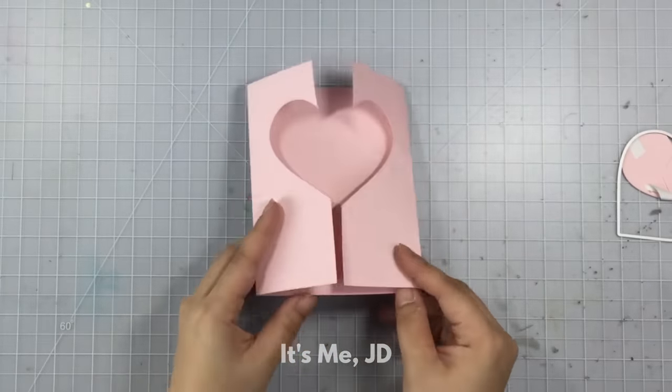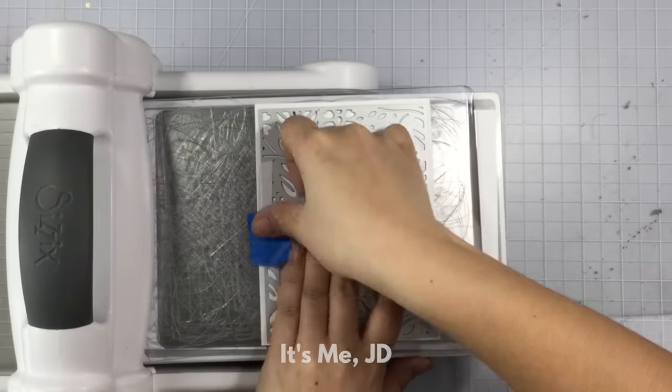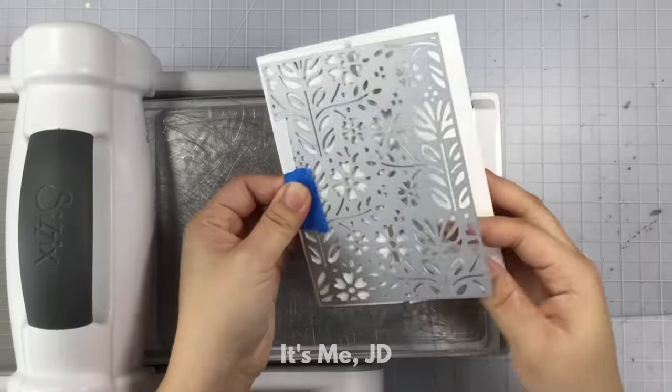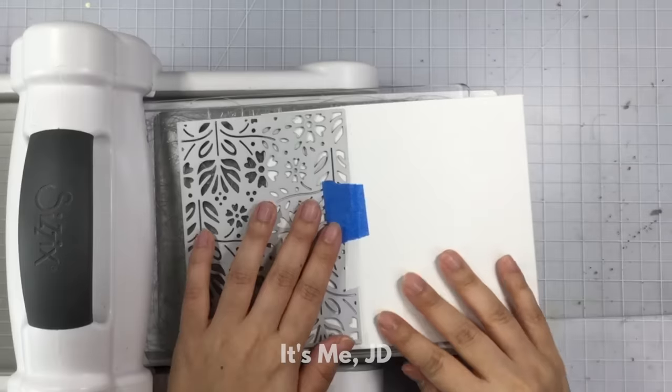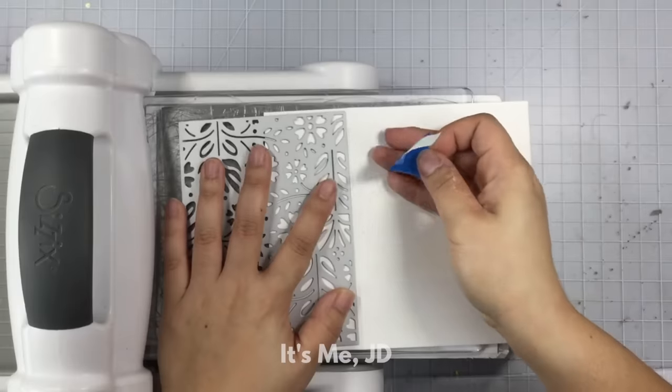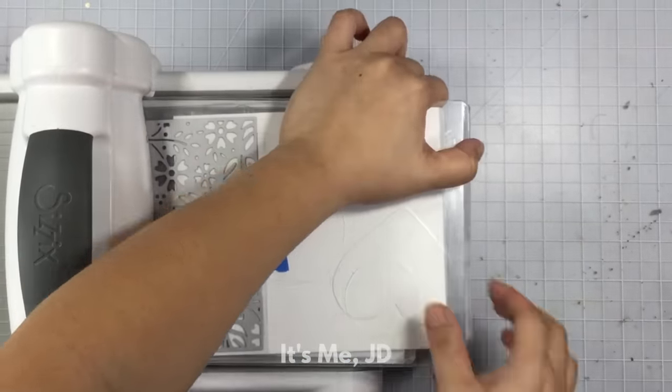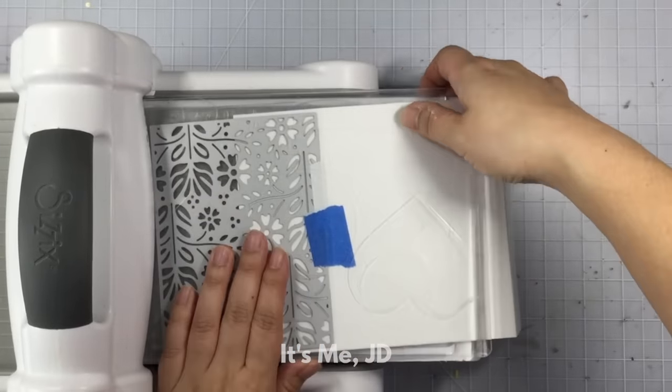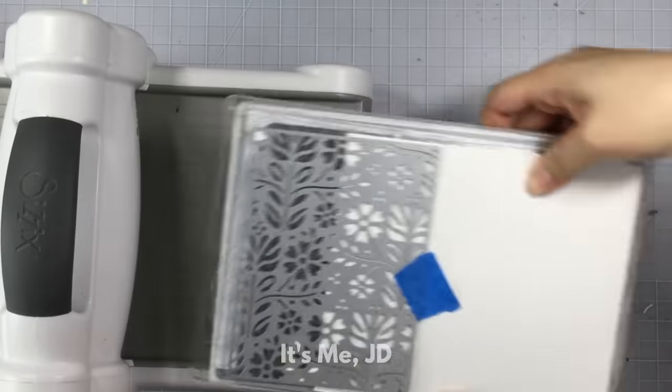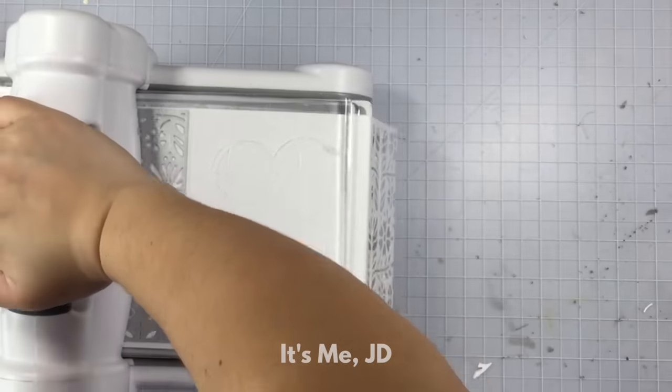To get more use of your fancy background dies that tend to be at a higher price point, you can use them to make gatefold cards. So I took an entire background die and laid it across my panel closed, and then I traced it so I know exactly where to position it. I opened the gatefold card and just left the die hanging half on one side of the gatefold panel, and then I'll run that through my die cutting machine. Since this is a manual die cutting machine, I had to run it through a couple times just to make sure I get all of those little bits nice and cut. And then I'll just do the same thing on the other side.